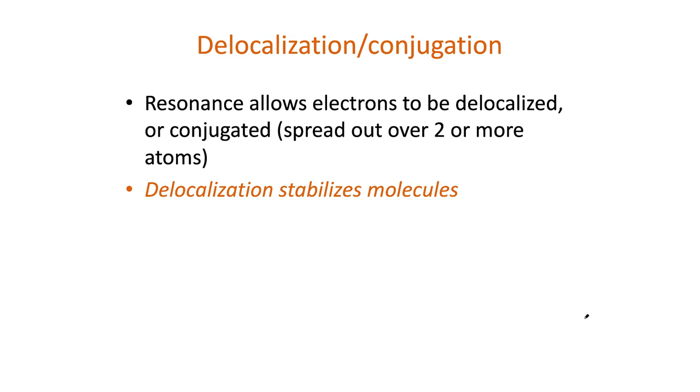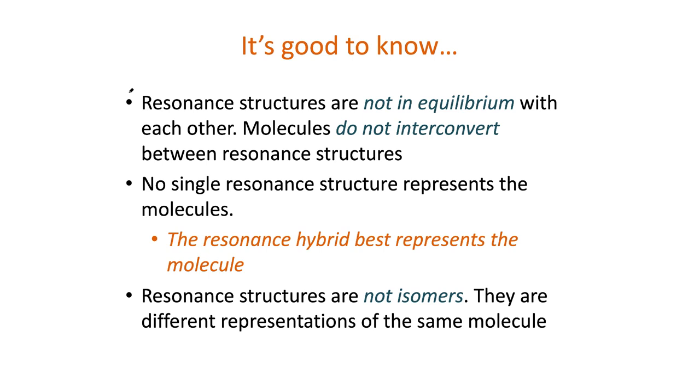So what's the effect of delocalization or resonance? Delocalization allows electrons to be spread out or conjugated over two or more atoms. Delocalization stabilizes molecules. Here are some reminders before we go on. Resonance structures are not in equilibrium with each other, so molecules do not interconvert between resonance structures. No single resonance structure represents the molecule. The resonance hybrid best represents the molecule. Resonance structures are not isomers. They are different representations of the same molecule.